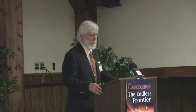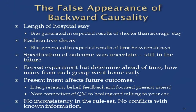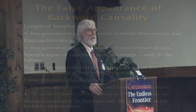The false appearance of backward causality. Imagine 20,000 hospital records going back over two decades. You're going to break them into 20 groups of 1,000, randomly separated, and each group of 1,000 you'll randomly break into two groups of 500. One group of 500 is a control group. The other group — you're going to use your intent to improve the health of those people. This was done — the first one I know of was done in Israel.